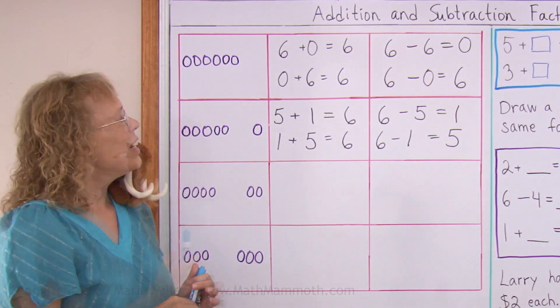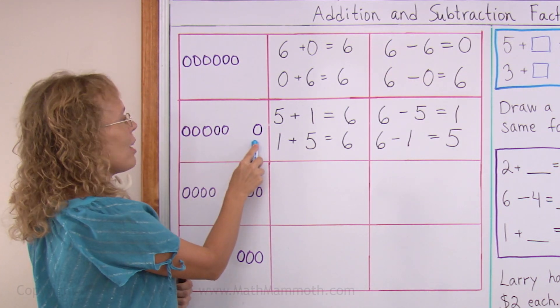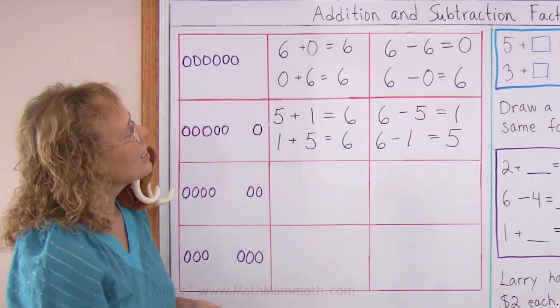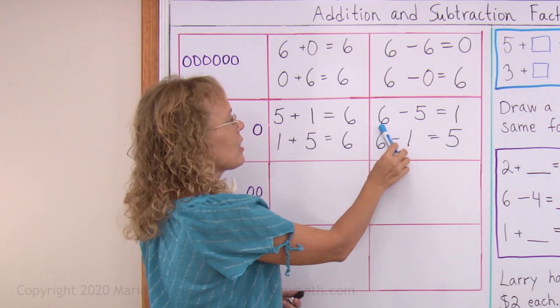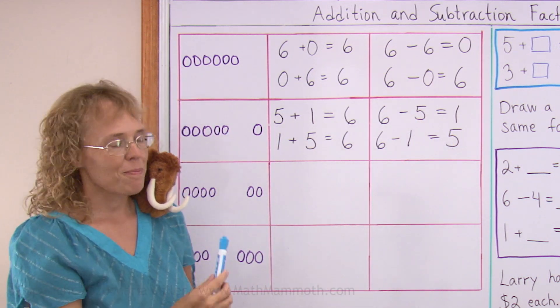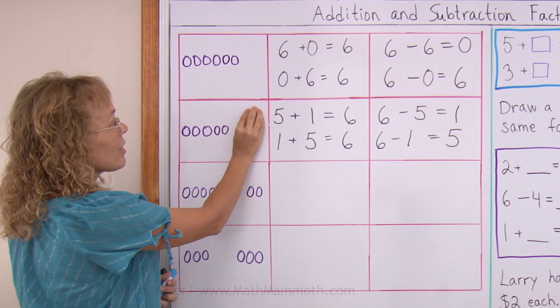And then the other grouping would be five and one. So we get five plus one, one plus five equals six, and these two subtractions: six minus five equals one, six minus one equals five, either subtracting this or these.